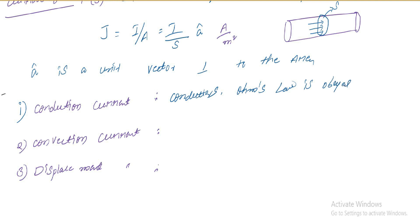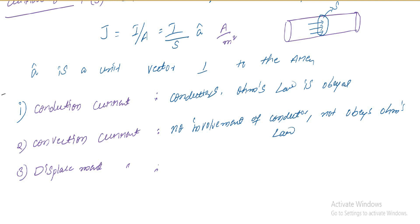Coming to convection current: it does not involve conductors, and it does not obey Ohm's law. Convection current is nothing but the current which passes through the insulator. The example for convection current is the beam of electrons which are passing in a vacuum tube.